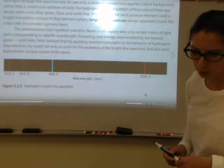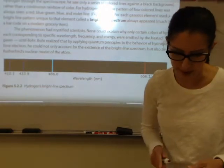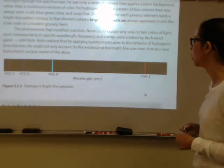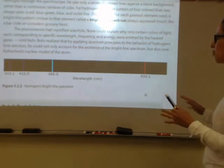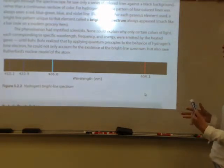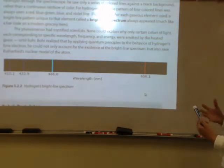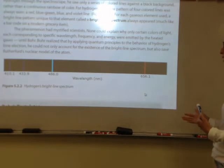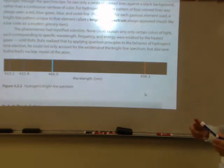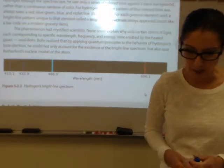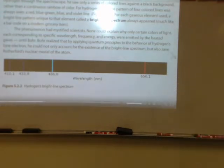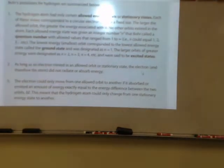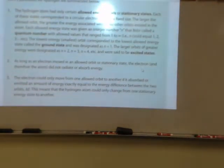Bohr realized that if he applied quantum principles to the behavior of hydrogen's one electron, he could account for why there was a bright line spectrum and he could save Rutherford's nuclear model of the atom. What were Bohr's postulates for hydrogen?